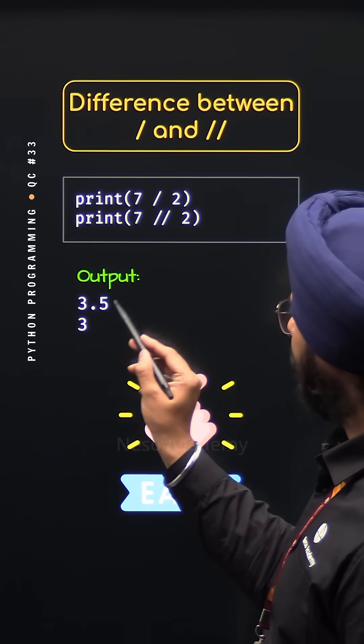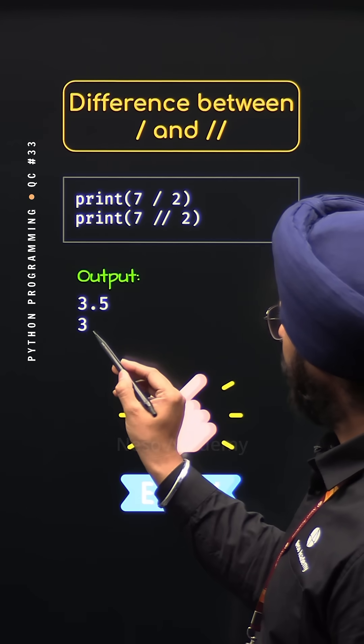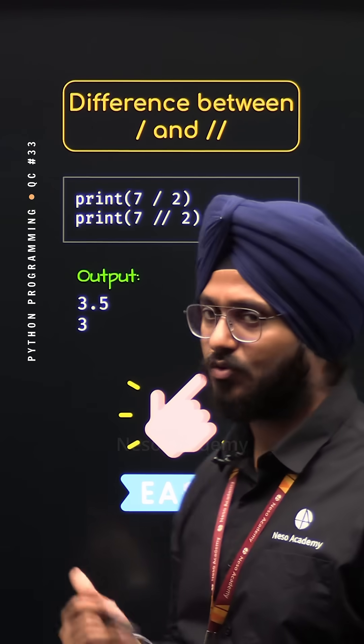We are getting 3.5 in case of normal division, which is the exact value. But in case of floor division, 0.5 is truncated and we are left with integer value 3.